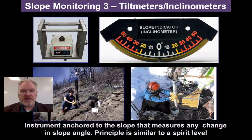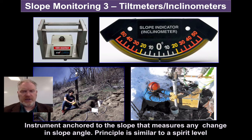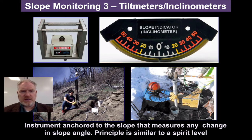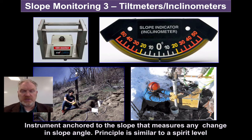We can also measure the tilt or inclination of a slope, again looking for changes. There are a whole series of different types of tilt meters that can be installed on the side of a slope. We use a similar technology on volcanoes to look for any inflation or deflation of volcanic slopes. These machines measure changes in angle — similar to a spirit level — and can send their data back to a monitoring station. You can see in the photo on the bottom left a solar panel to power it and an aerial to send the data back.